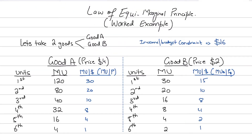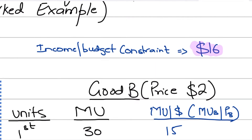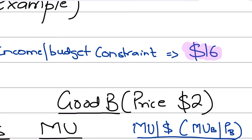Now let's move to our main example. We have an income or budget constraint of 16 dollars — a consumer has 16 dollars in his pocket to buy groceries. He has decided he needs to buy two goods: good A and good B. He has not yet decided what quantity of each to buy. He needs a rational basis for that decision, and that is where economics and the equimarginal principle come in to help him find the optimum bundle that maximizes total utility.